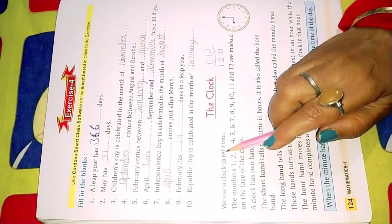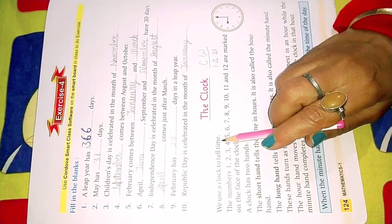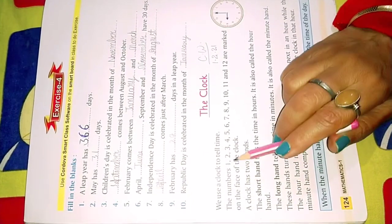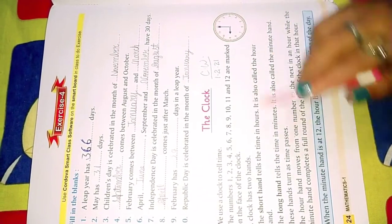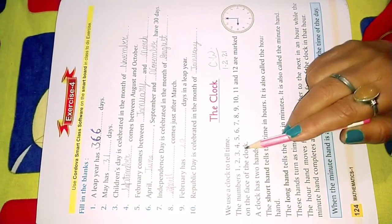We use a clock to tell time. Yes, we see a clock to see the time. The numbers 1, 2, 3, 4, 5, 6, 7, 8, 9, 10, 11, and 12 are marked on the face of the clock.